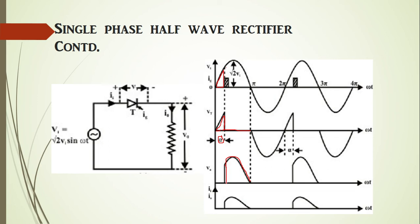The entire input voltage is impressed at the output, giving us the output voltage. During the negative half cycle, the thyristor is reverse biased and hence there is no output voltage — the entire reverse voltage is applied across the thyristor. Since this is a resistive load, the voltage and current are in phase. We can control the output voltage by controlling this firing angle alpha; hence, this is a phase-controlled rectifier.